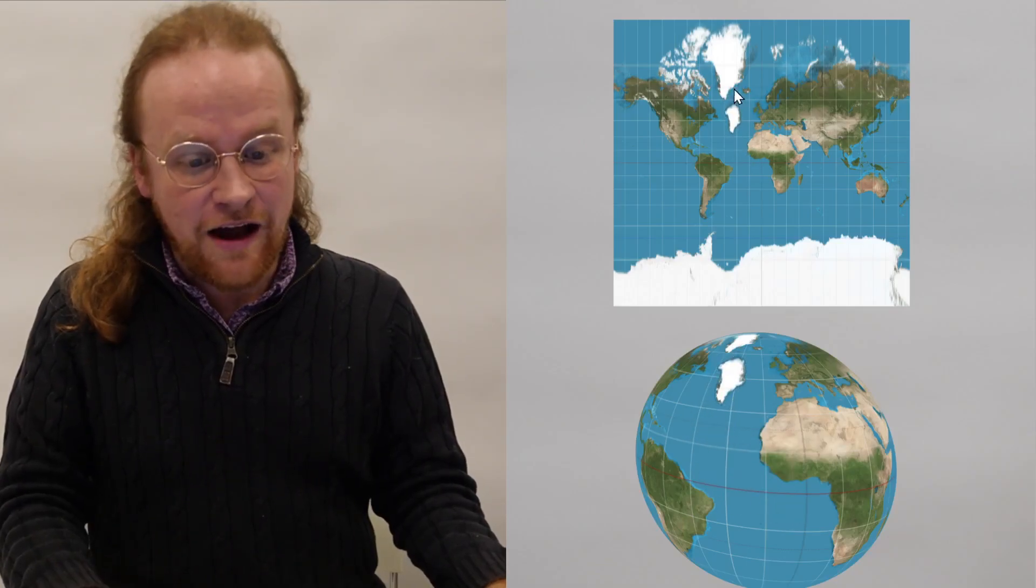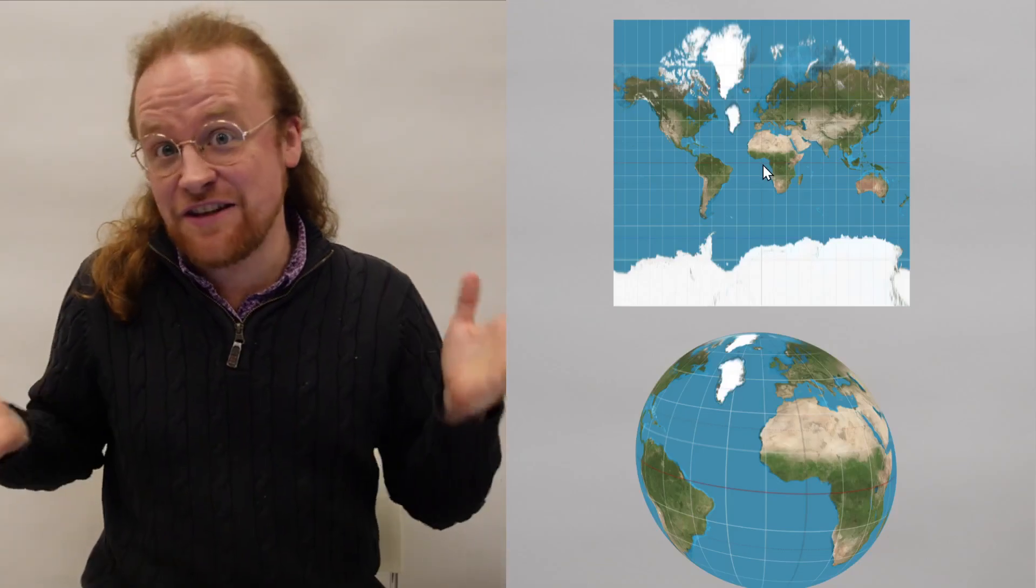A famous example with this map is that if we look down here, I'm first going to move Greenland around and we can see that even though I'm not changing its size at all, its size on the map is hugely dependent on where it is. That's just the nature of the distortion that this map creates.